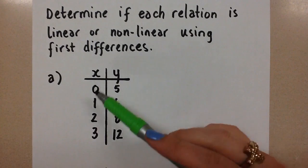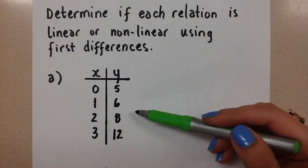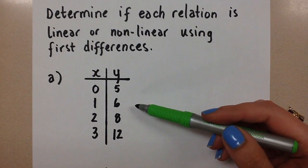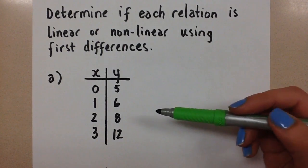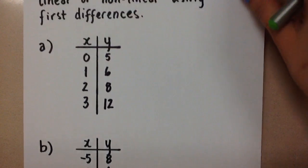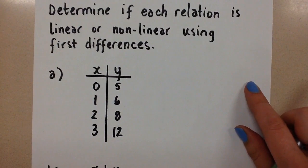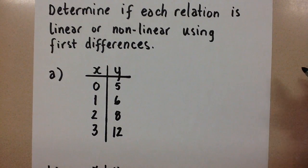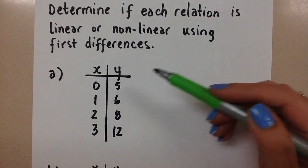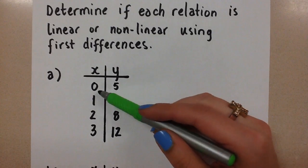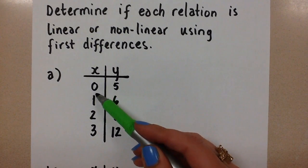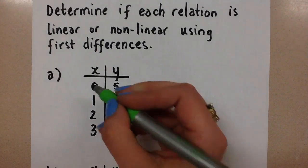So when we have a table of values given to us, we can use the first differences method to find out if this is a linear relation or not without having to graph it. So I have two table of values here. I'm going to show you how we do this. In order to do first differences, we want to find the differences in the y values, but it only works if the differences in the x values are constant. So let's just check, make sure that the x values are going up constantly by the same amount.